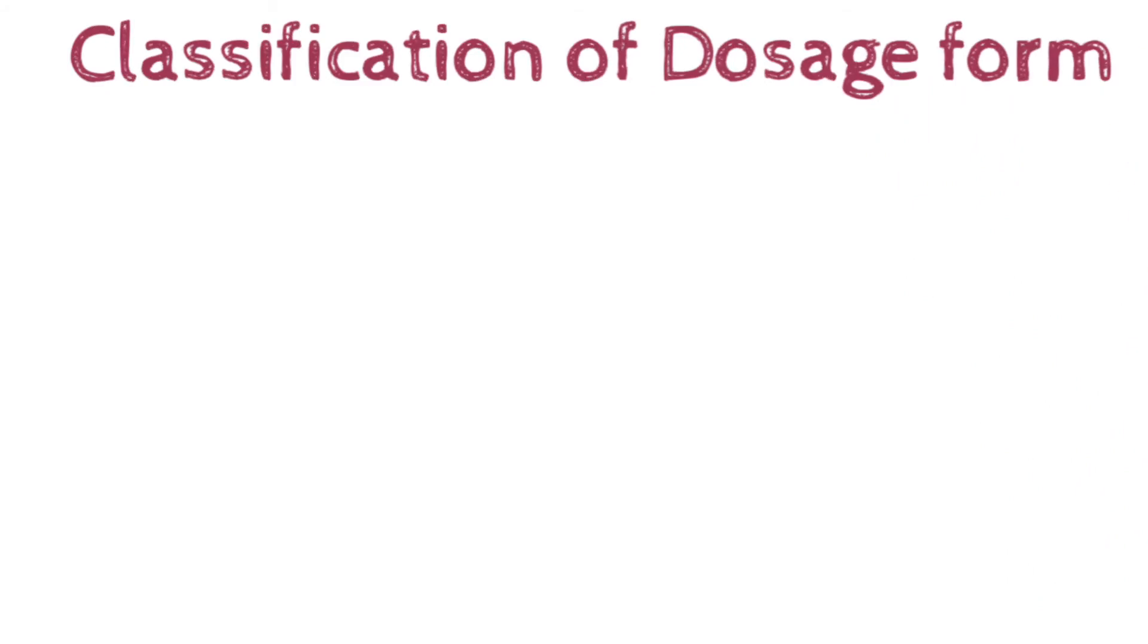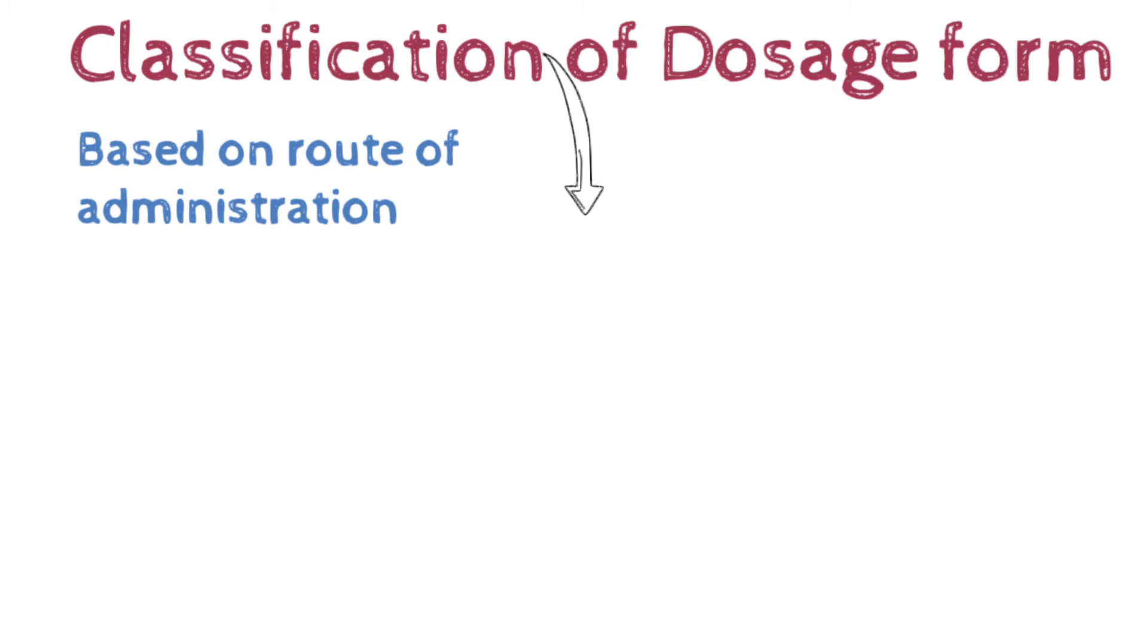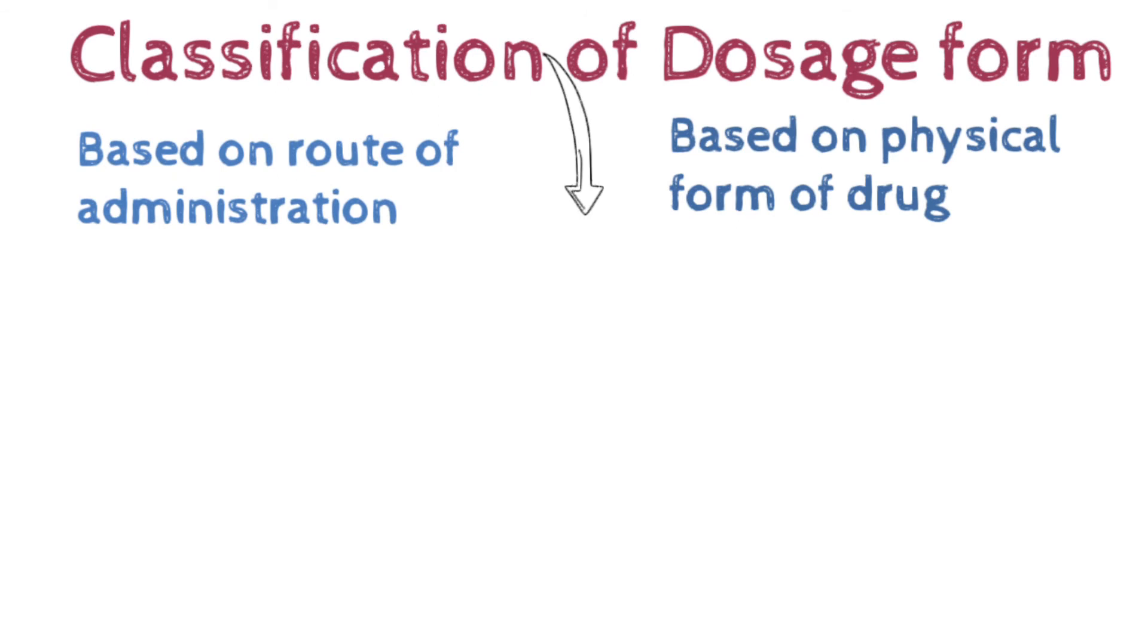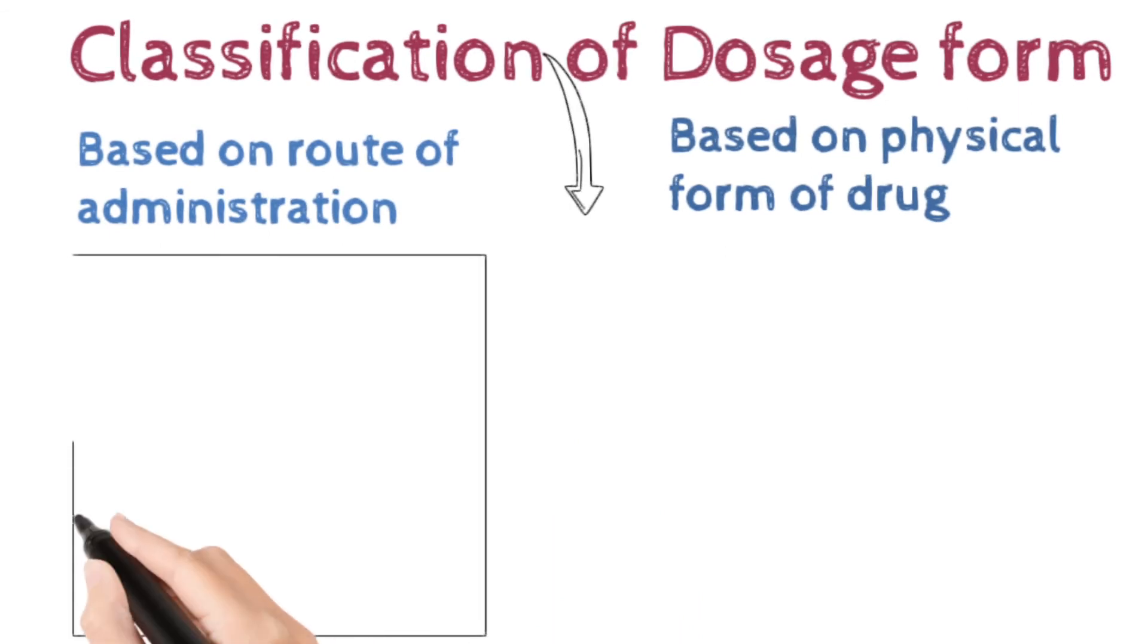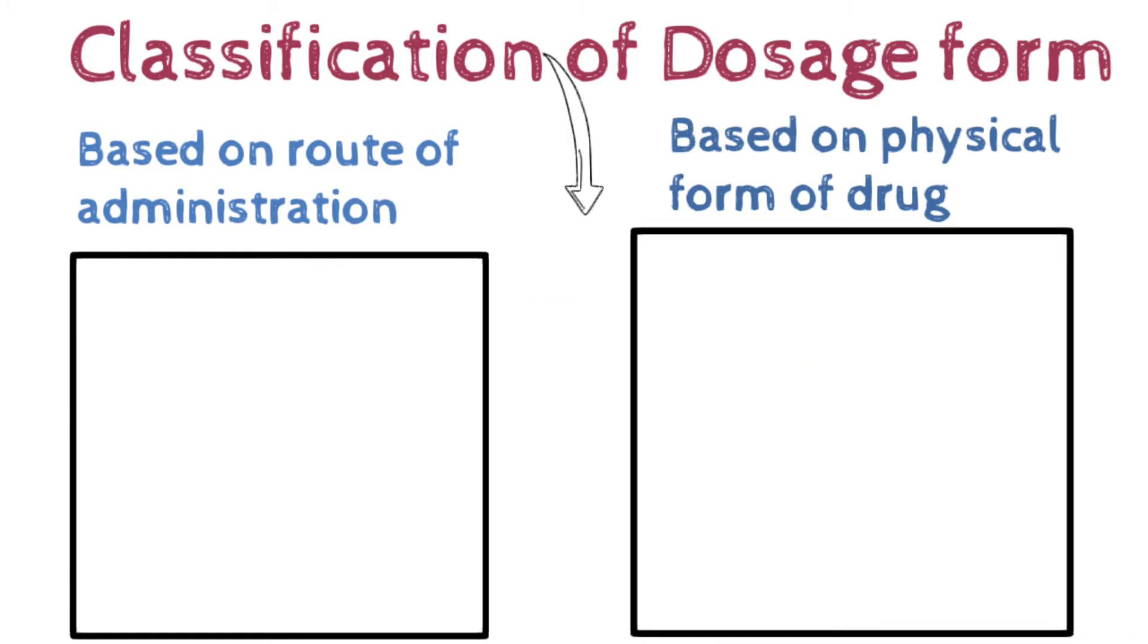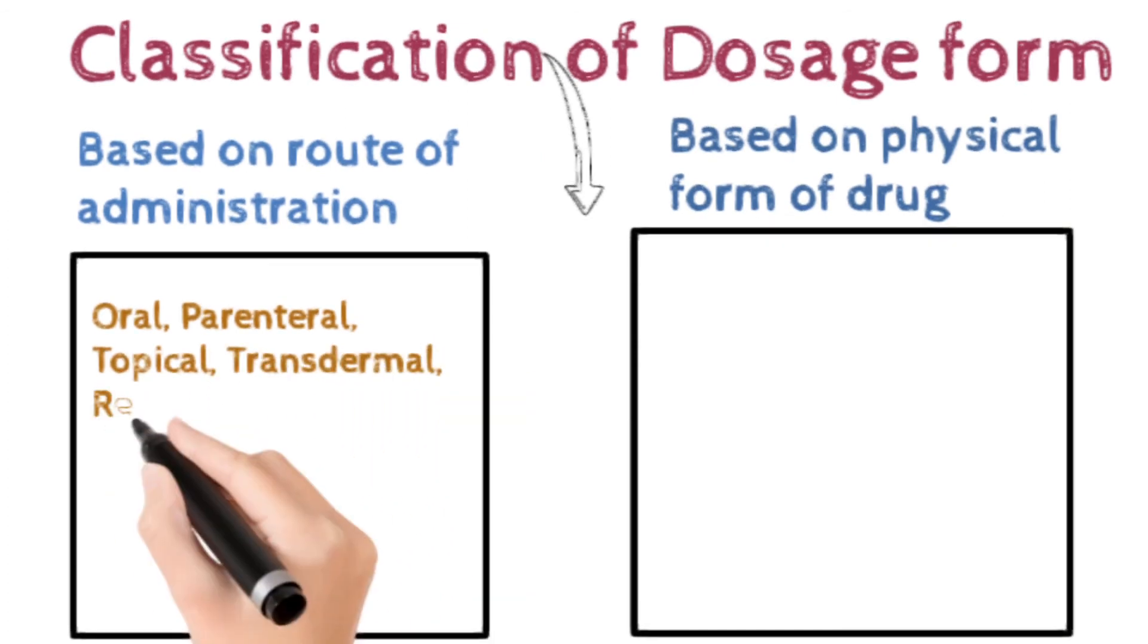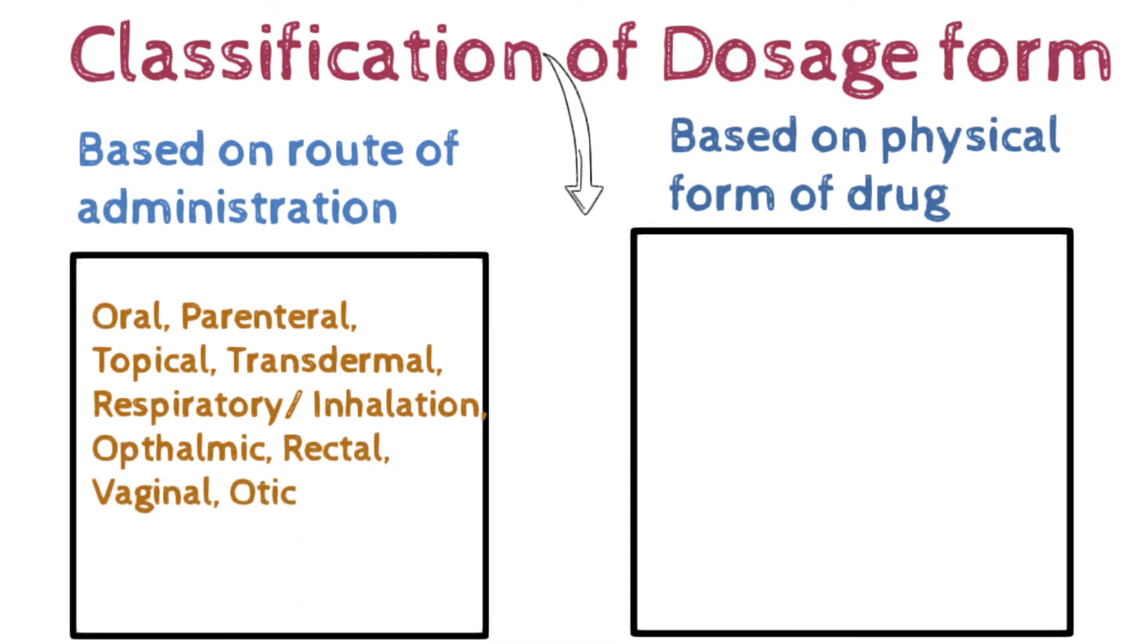Classification of dosage form. Classification of dosage forms are divided into various types, but here we consider only two. Based on route of administration and based on physical form of the drug. Based on route of administration, there are many routes. We use for taking medicines. First is oral, parenteral, topical, transdermal, respiratory and inhalation, ophthalmic, and rectal and vaginal. Oral route is widely used for taking any medicine. Parenteral is also used for its 100% bioavailability. Topical is used for topical effect of the drug. And transdermal like patches are used.